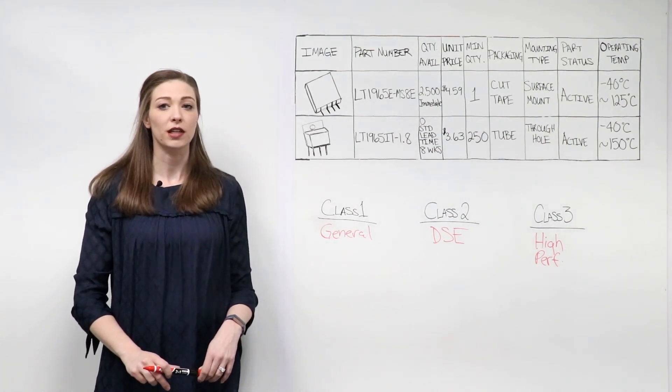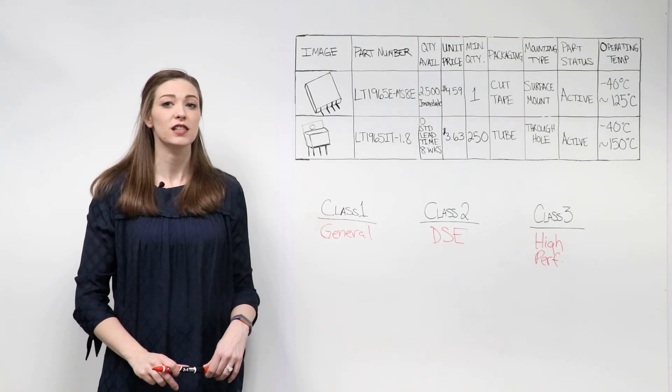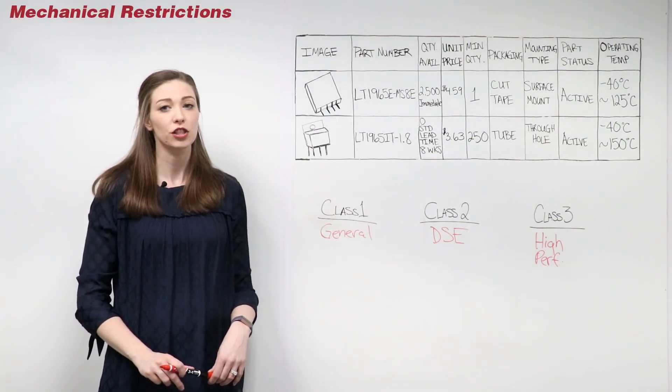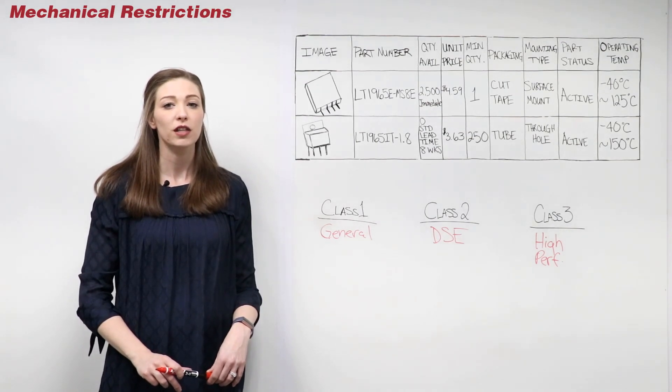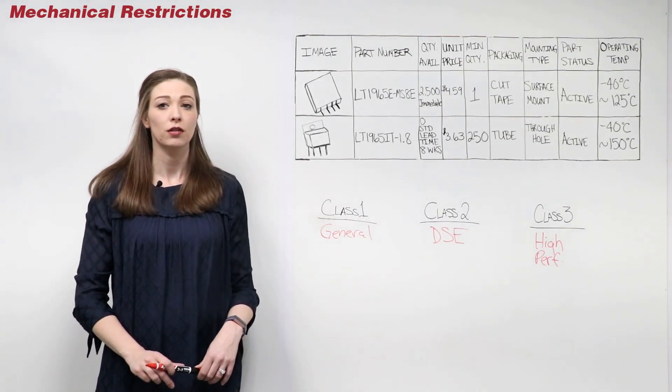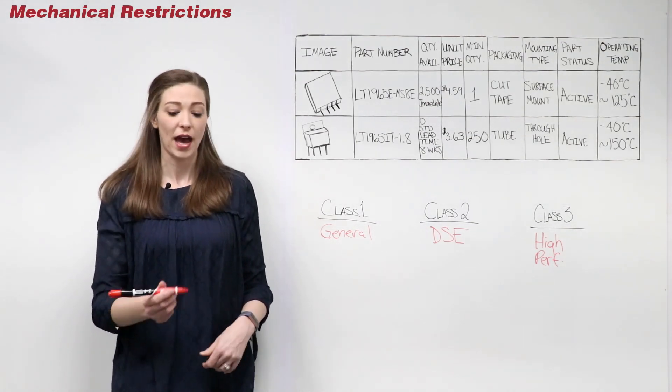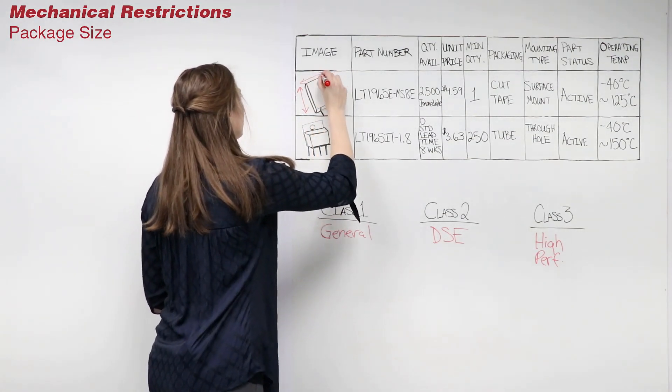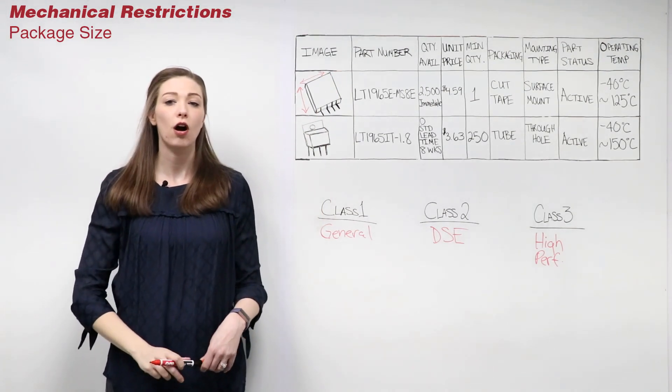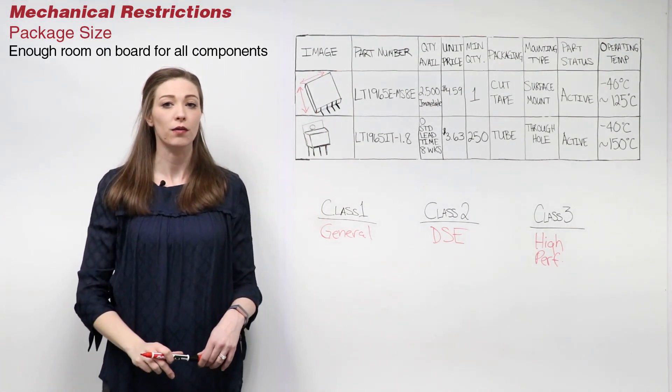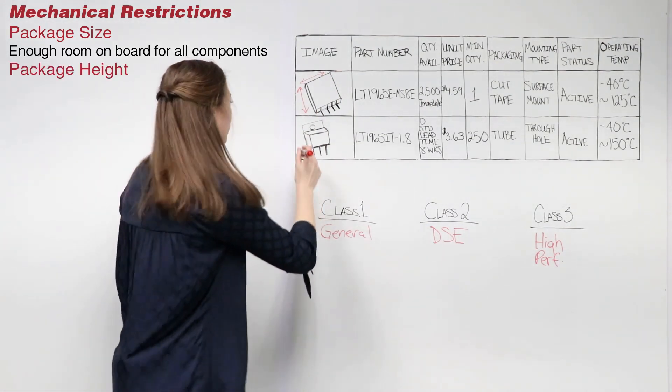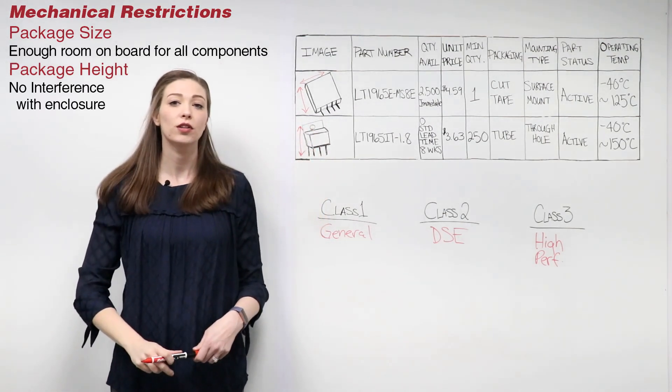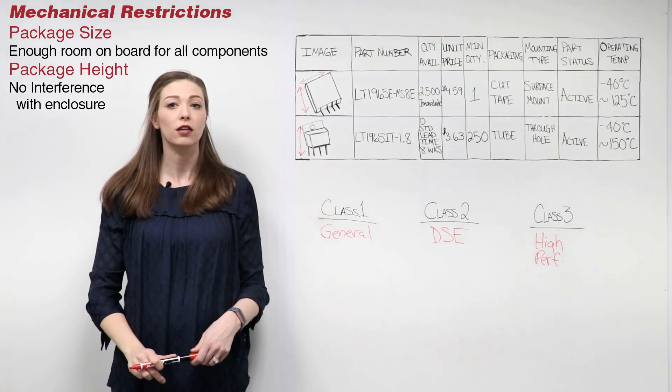Now that the class has been determined, there are a few other factors to consider. When selecting a component, you must consider the mechanical restrictions. Many boards must fit into a specified enclosure. Therefore, you must consider the package size to ensure all the components will fit on the board and package height so the component will not interfere with the mechanical enclosure.